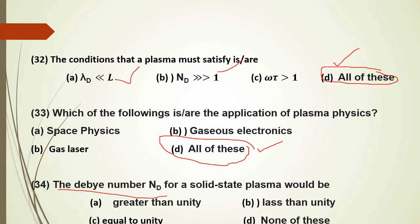In solid state plasma, the electrical energy is less than in regular plasma because in solid state plasma the temperature is low and the density is very high. Due to the high density and low temperature ratio, the device operates at environmental energy levels.